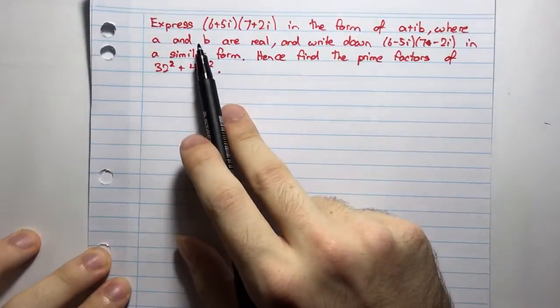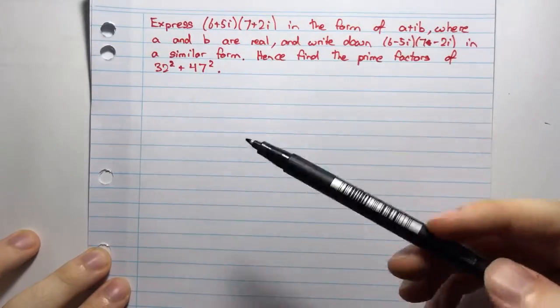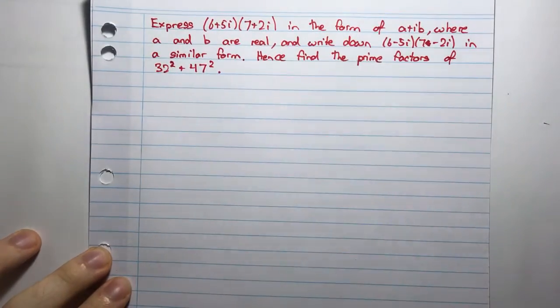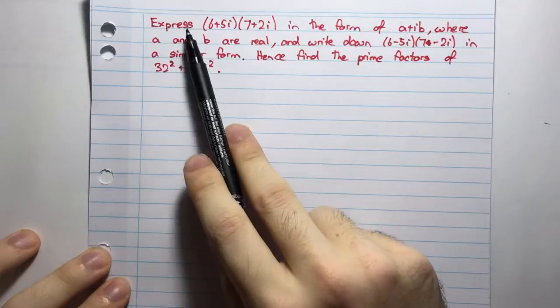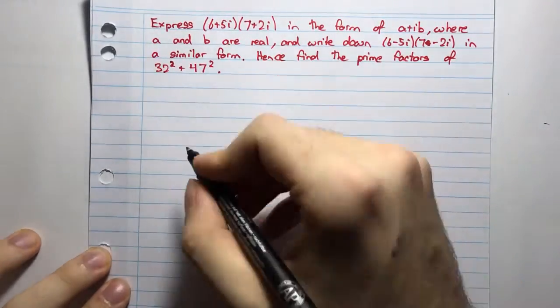Okay, so you might not know where to start with this question, but I always find that when you don't know where to start, or what the relationship between parts of a question are, just start at the simple stuff which they've asked us to do, which is to express this in the form of a+ib. Pretty much everyone can do this.